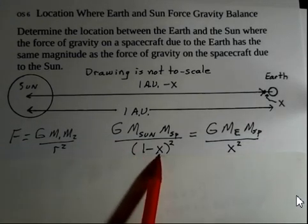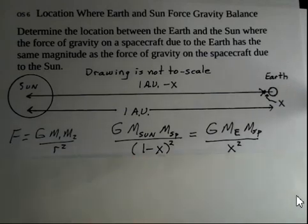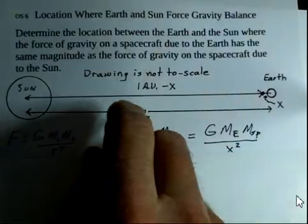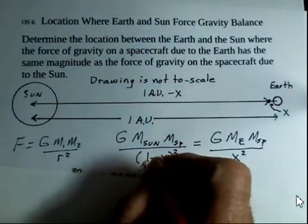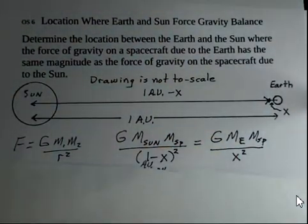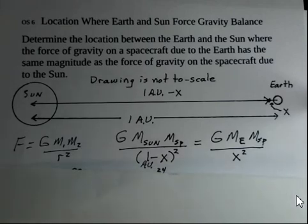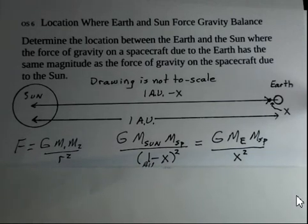We're going to solve for x, and we're going to come up with a number in terms of an astronomical unit. This x is not in meters. This is 1AU. I should even kind of scribble that in here. This is 1AU. So, x will not have units of meters. I'll convert it later. But it will have units of astronomical units.